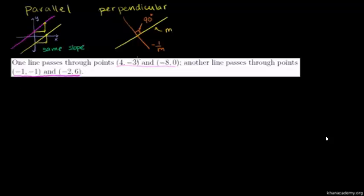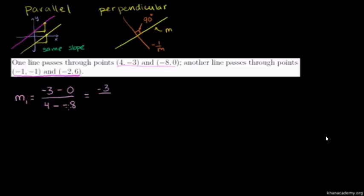For line 1, slope 1: change in y is negative 3 minus 0, over 4 minus negative 8. That gives us negative 3 over 4 plus 8, which is negative 3 over 12, which equals negative 1 fourth. Divide numerator and denominator by 3. That's the slope of the first line.